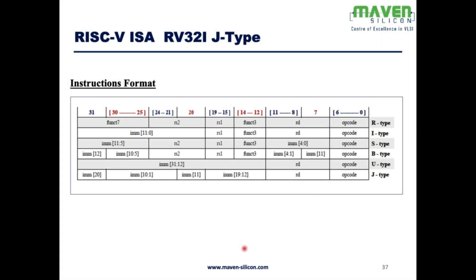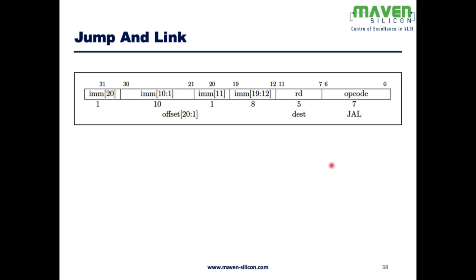We have seen B-type, now let's look at J-type jump and link. Here the offset is defined by the immediate value, overall 20 bits, vector 20 down to 1. And there is a destination register Rd and the opcode, which defines what type of instruction it is.